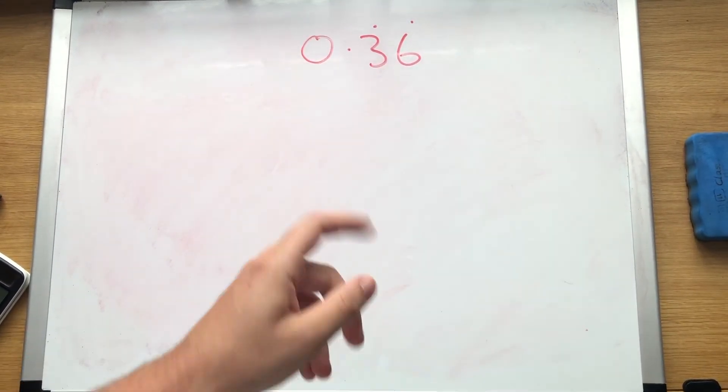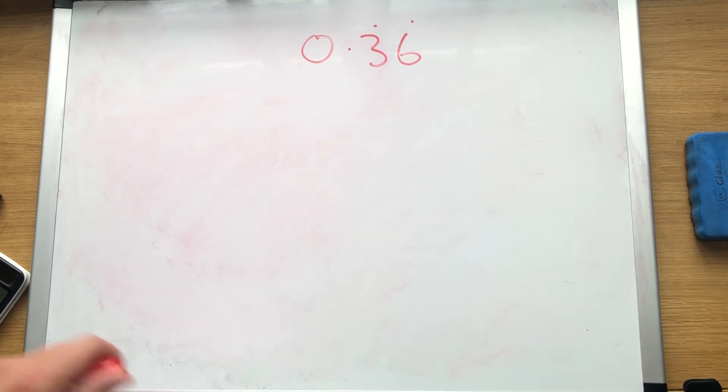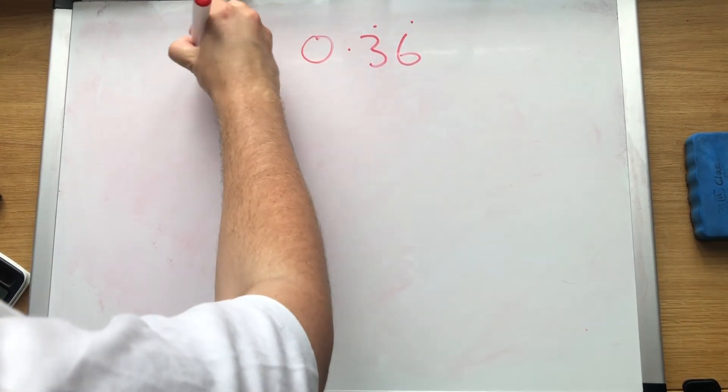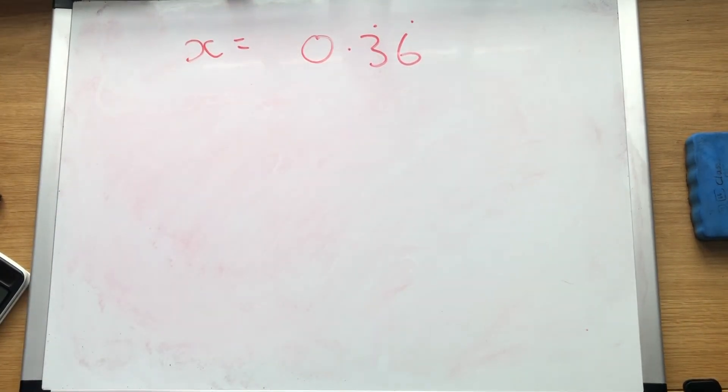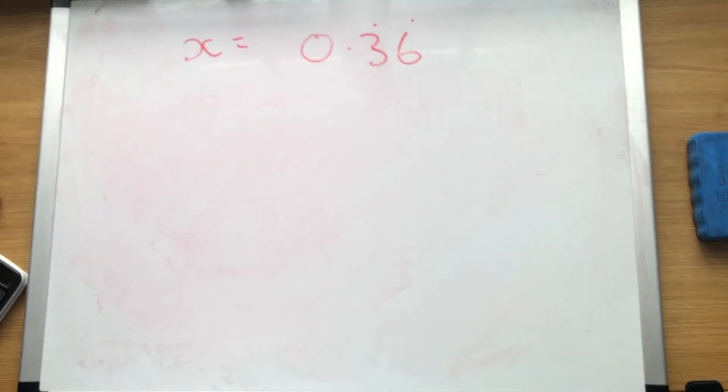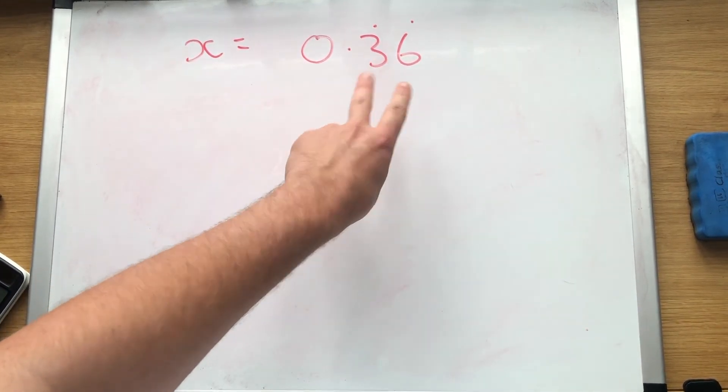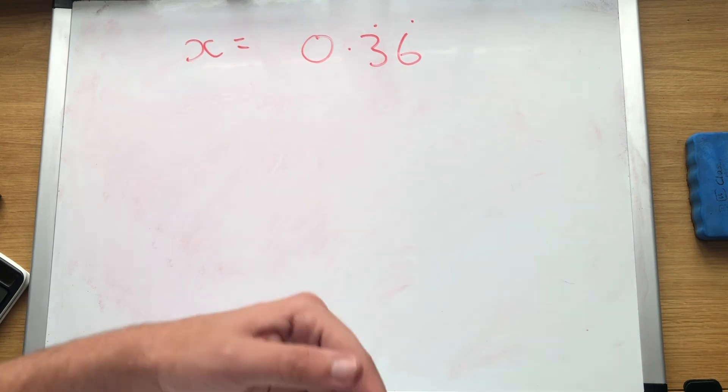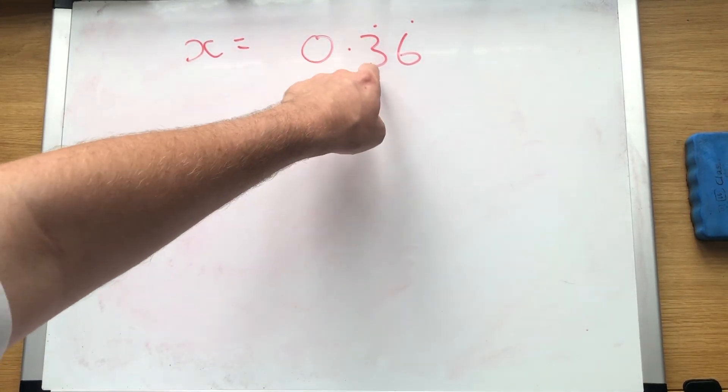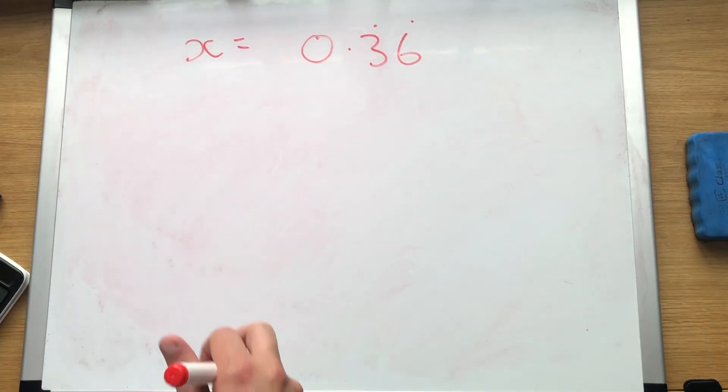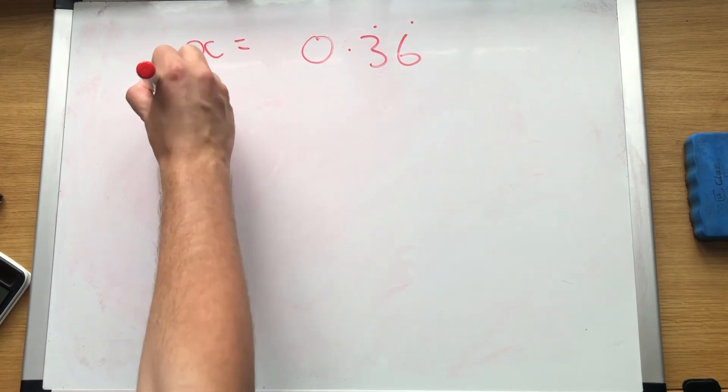OK, two more examples. 0.36 recurring. Our first step stays the same: x equals. Our second step, checking if everything after the decimal place recurs. So that's 3, 6, 3, 6. The 3 recurs, the 6 recurs. We're good to go.